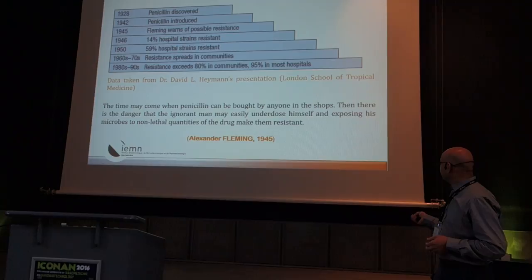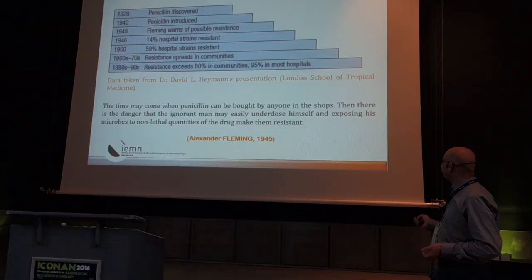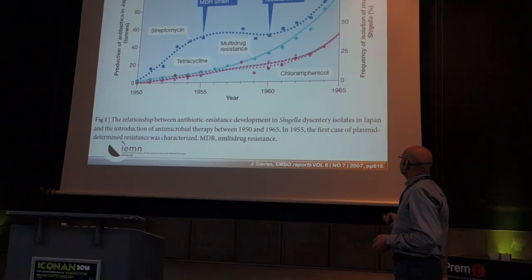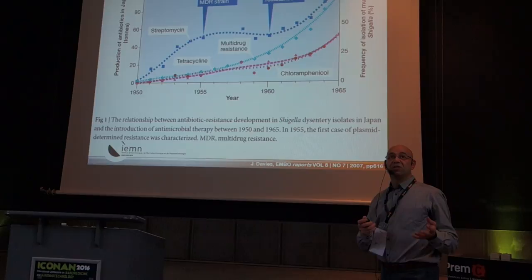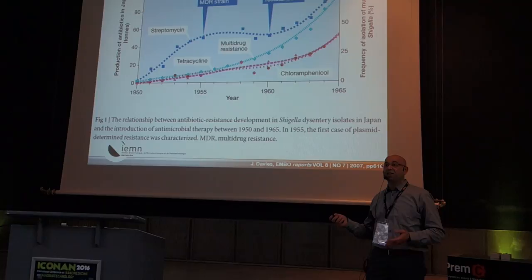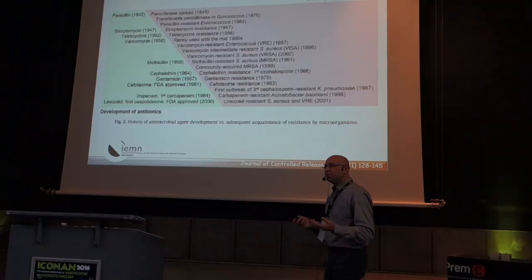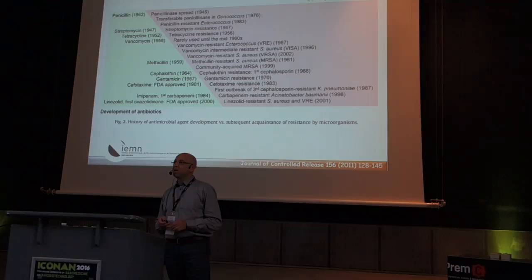Fleming said in 1945: 'The time may come when penicillin can be bought by anyone in the shops, then there's a danger that the ignorant man may easily underdose himself and expose his microbes to non-lethal quantities of drug.' So already in 1945. And what's even worse is not only drug resistance but also transfer of resistance — a resistant bacteria can transfer resistance to non-resistant bacteria. This gives you the trend of more and more bacteria becoming resistant to antibiotics.